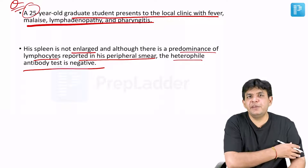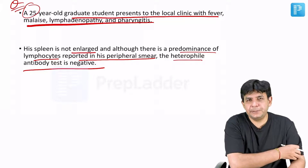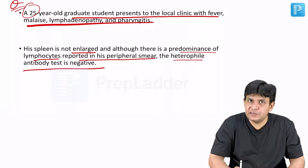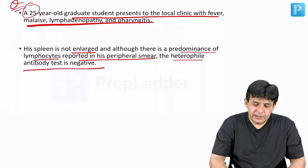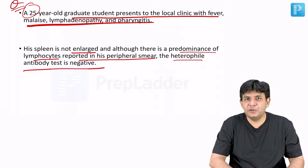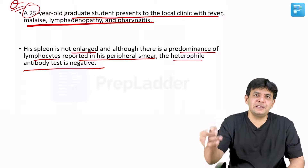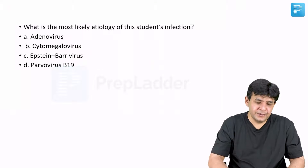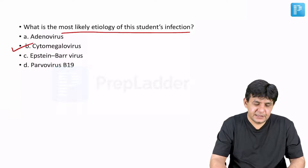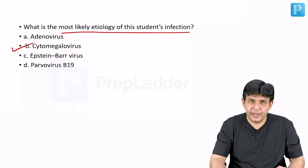So guys, it is going in the favor of infectious mononucleosis, but the last line changed the question. The heterophil antibody test is negative. And that particular test is negative in whom? Mononucleosis-like syndrome. So which of the following is the most likely etiology? The answer is CMV, not the Epstein-Barr virus.